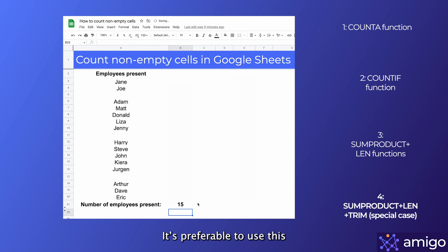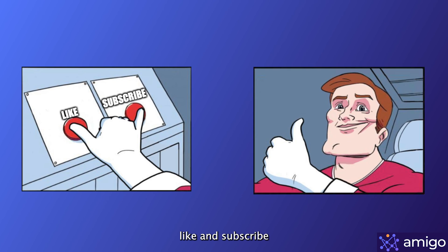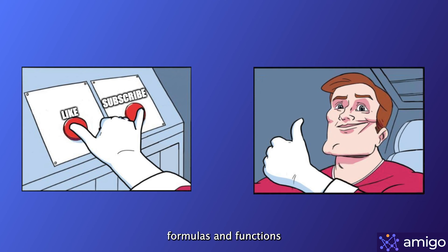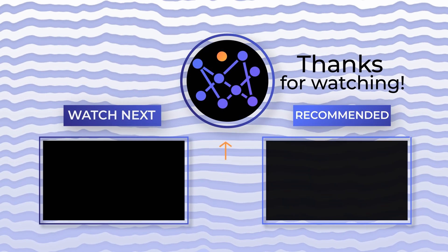It's preferable to use the SUMPRODUCT with TRIM method for larger datasets, and COUNTIF or COUNTA for smaller datasets. I hope you liked the video — hit like and subscribe because we'll be covering other useful formulas and functions which can save you a lot of time. Until then, adios amigos!